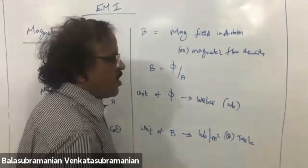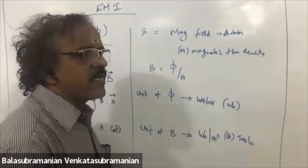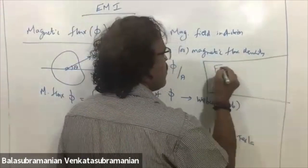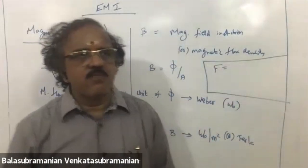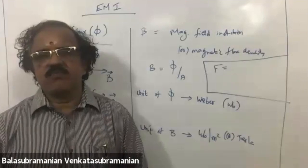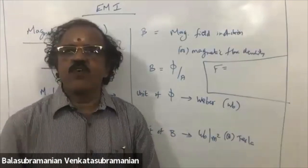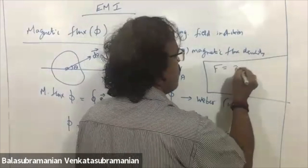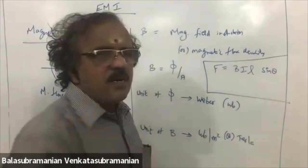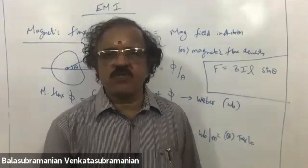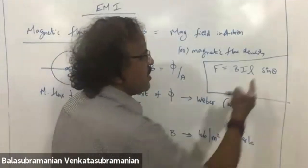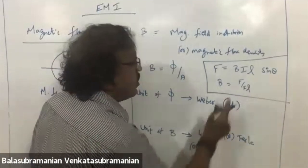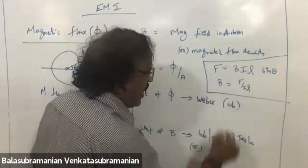Now there are some basic units. I want the unit not in terms of Weber but in terms of basic units. We know that whenever a current-carrying conductor is placed in a magnetic field, there exists a force. That force formula is given by F = BIL sinθ. A current-carrying conductor placed in a magnetic field experiences a force. When theta equals 90°, I can write B = F / IL. So the unit of B is Newton per Ampere·meter.